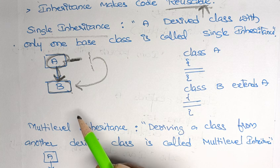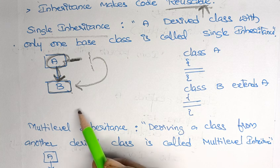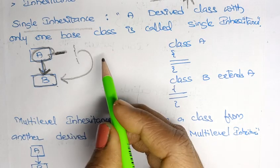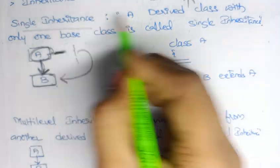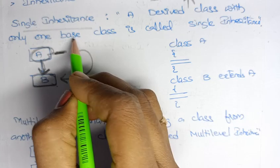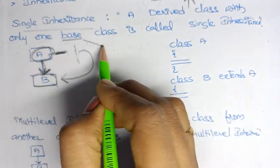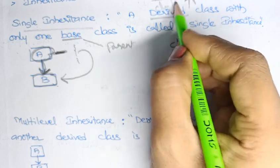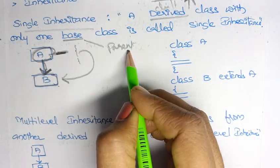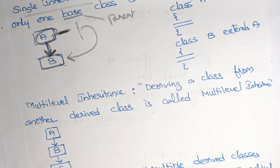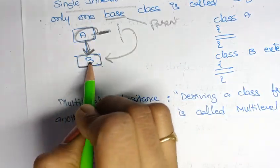Now we will see the types of inheritance: single inheritance, multi-level inheritance, multiple inheritance, hierarchical inheritance, and so on. We will see them one by one with simple programs. Single inheritance — a derived class with only one base class is called single inheritance. One child class with only one parent is nothing but single inheritance.